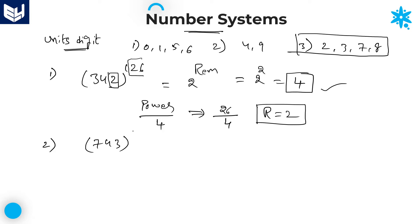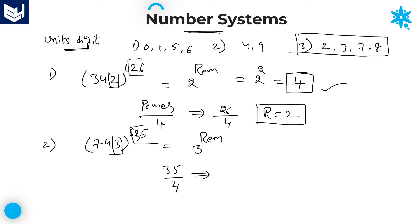743 to the power of 635. Here the number is ending with 3, which belongs to third category digits, therefore the required units digit is 3 power remainder. Take only the last two digits of the power: 35. Divide 35 by 4 — 4 × 8 = 32, so the remainder is 3. Substitute: 3 power 3 = 27, but we want only the units place, which is 7.